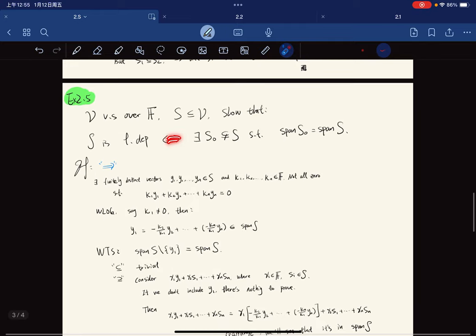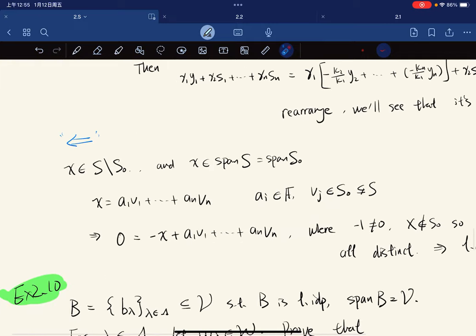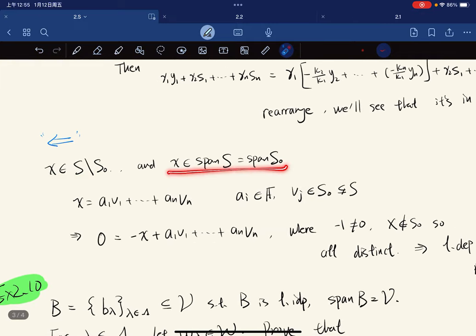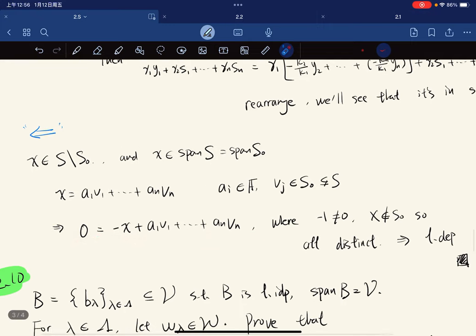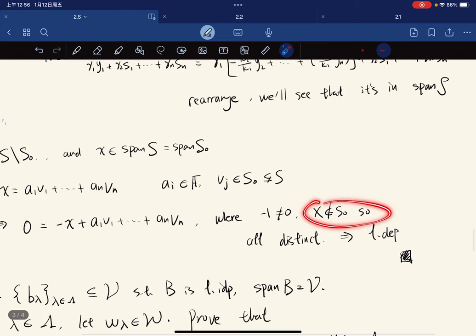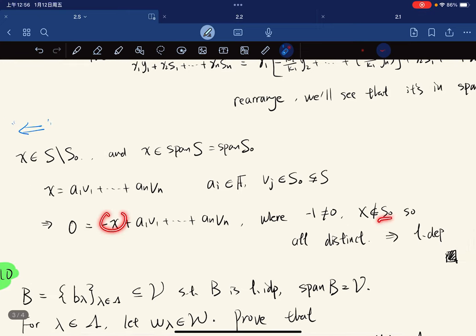Now we want to show this direction. We pick X. Then X can be written as this for all V_j in S naught but not in S. All the V_js are in S naught. Now we remove it. Because negative 1 is not equal to 0, so X is not, and X is also not in X naught, so all of them are distinct, which means that S is linearly dependent.